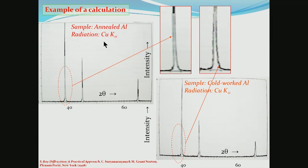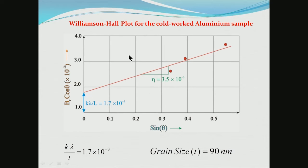An example shows an annealed sample of aluminum and a cold-worked sample of aluminum. The peak width of corresponding peaks is greater for the cold-worked sample, since annealing removes defects. A Williamson-Hall plot is shown for the cold-worked aluminum sample — B(R) cos θ versus sin θ — and from the intercept (related to crystallite size T) one can derive that the average crystallite size is 90 nanometers.